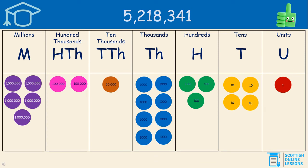So the answers look a bit like this. As we can see, there was 1 in the units column, 4 in the tens column with a value of 40, 3 in the hundreds column with a value of 300, 8 in the thousands column with a value of 8,000. In the ten thousands column there was only 1, a value of 10,000. In the hundreds thousands column there were 2, a value of 200,000. And in the millions column, there were 5 place value counters — a value of 5 million. Well done if you completed that.